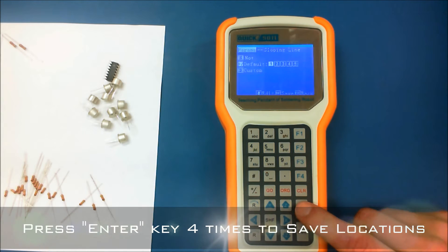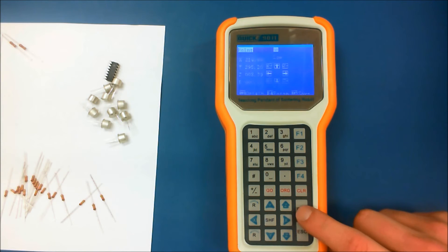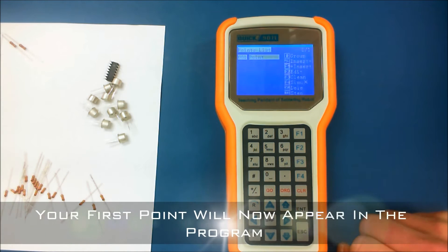To enter all these values into our program we'll go ahead and press the enter button four times saving the wire feed values, the sloping line start and end points, as well as your actual soldering location. And you'll actually notice the first point now appear in your program.